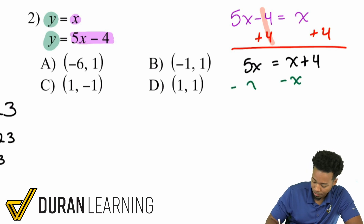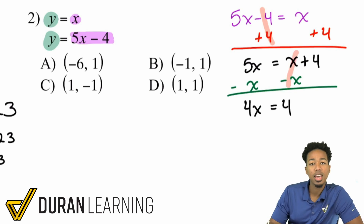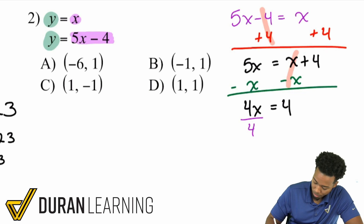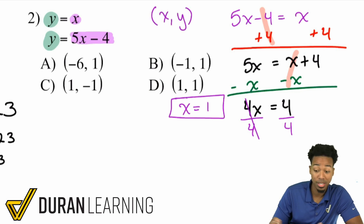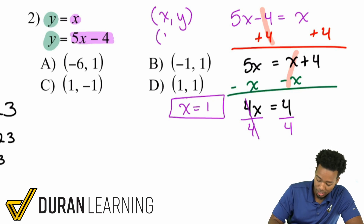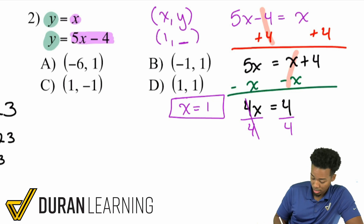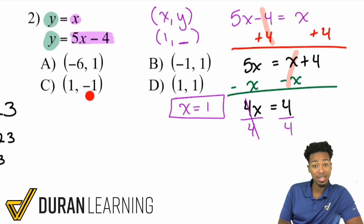Moving the x over gives 4x equals 4. Dividing both sides by 4 gives x equals 1. The answer is listed as (x, y), so x equals 1. Looking at the answer choices, only C and D have x equal to 1, so we need to figure out whether y is negative 1 or positive 1.